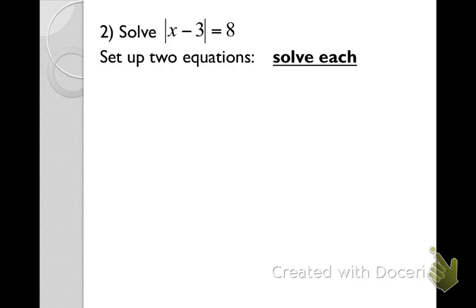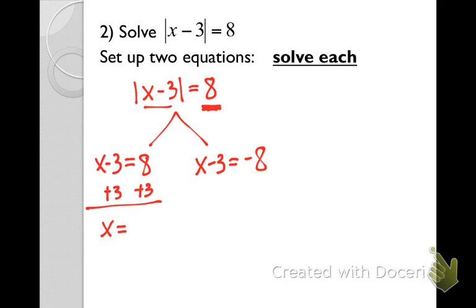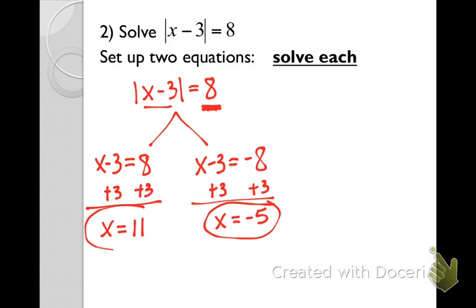Here's our next one — we have a minus three inside the absolute value bars, equal to eight. The absolute value is already alone, so we break it into two problems: x minus three equals eight, and x minus three equals negative eight. Adding three on both sides of the left gives x equals eleven. Adding three on both sides of the right gives x equals negative five. Notice these answers are eleven and negative five — they're not always a number and its opposite.